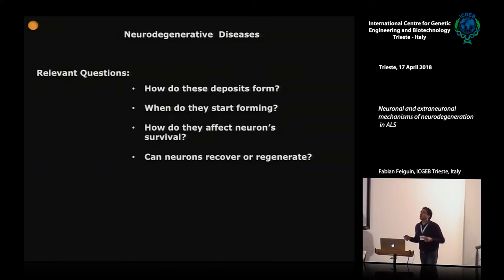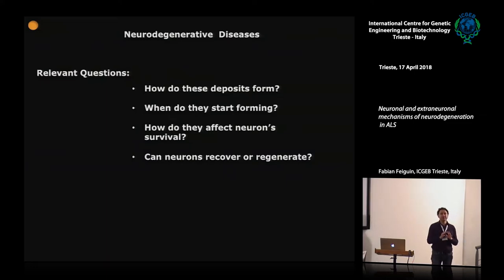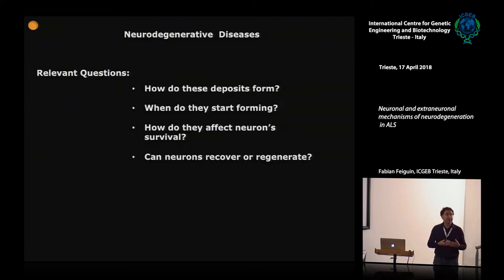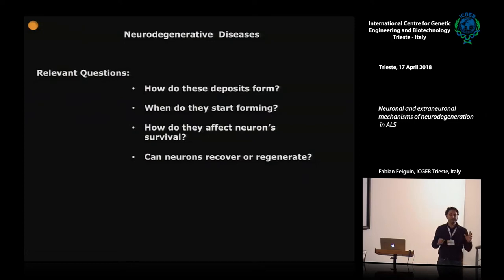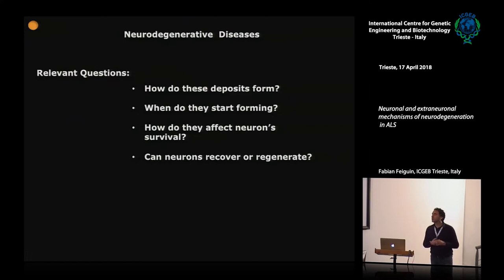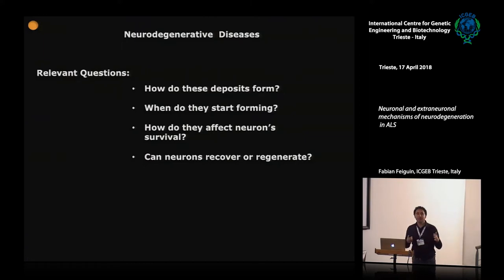Another important question in the field is: when do these deposits start forming? This is very interesting because the diseases appear in adult age, but they could start forming during development, in the very early stages of formation, and that could completely change the view of the disease. We also want to know the mechanism by which aggregations kill neurons, and whether neurons can recover — if they have some plasticity.